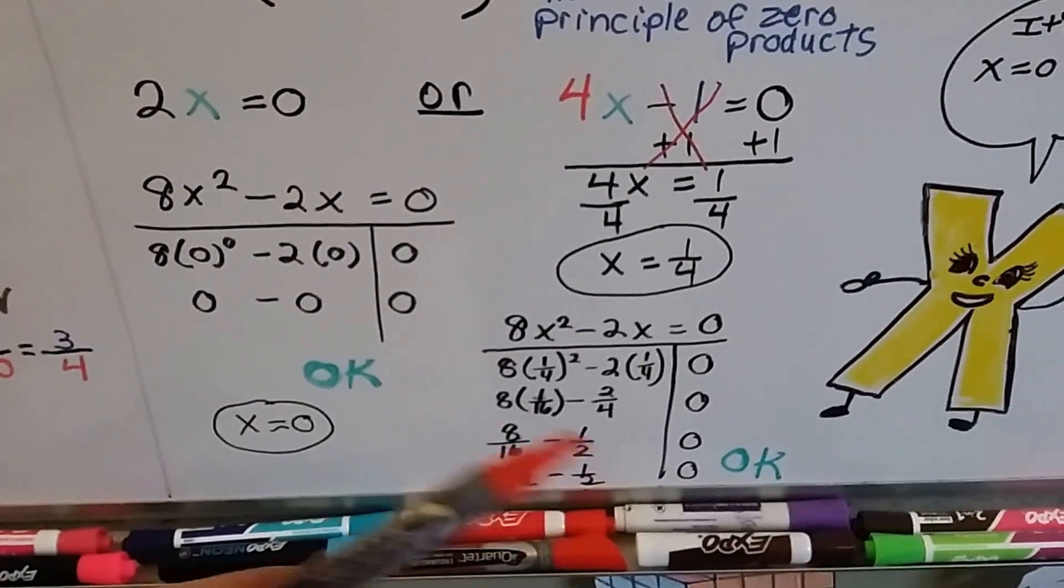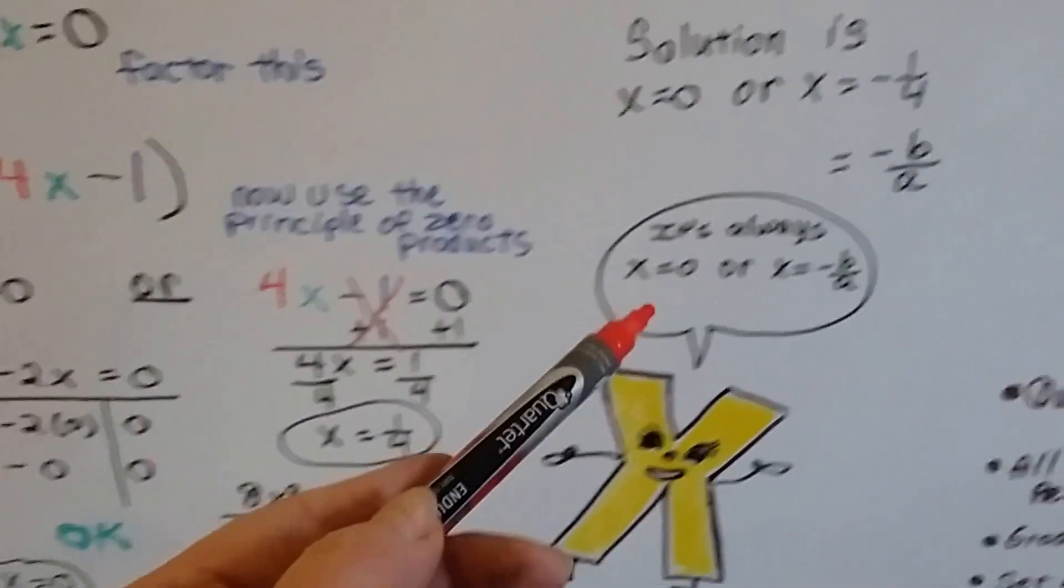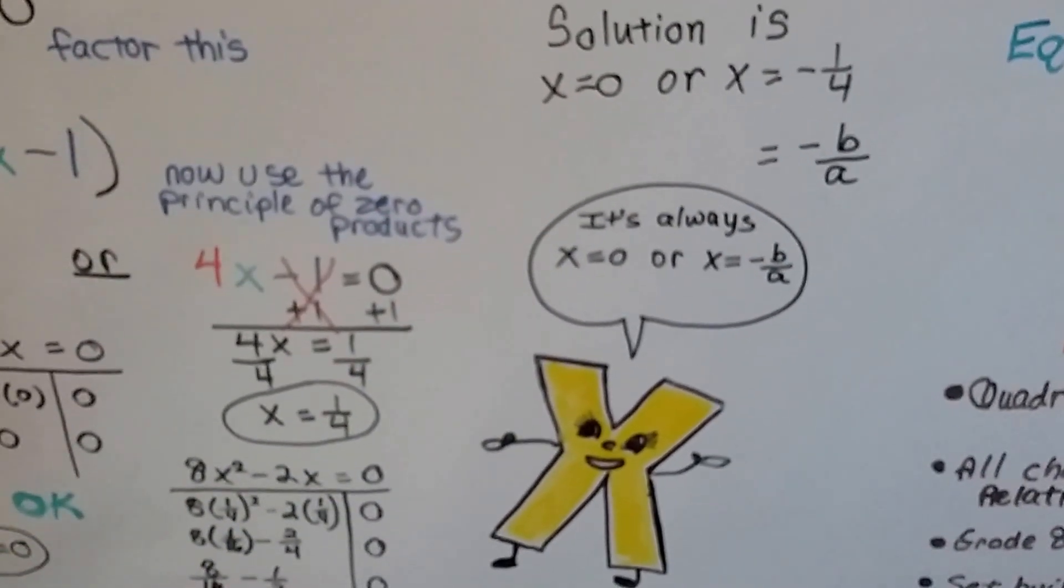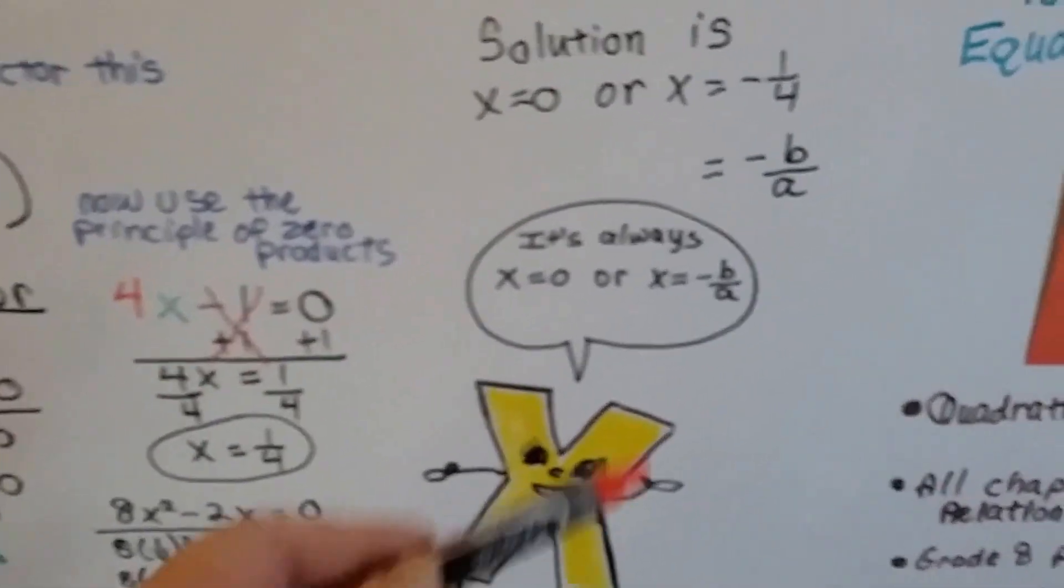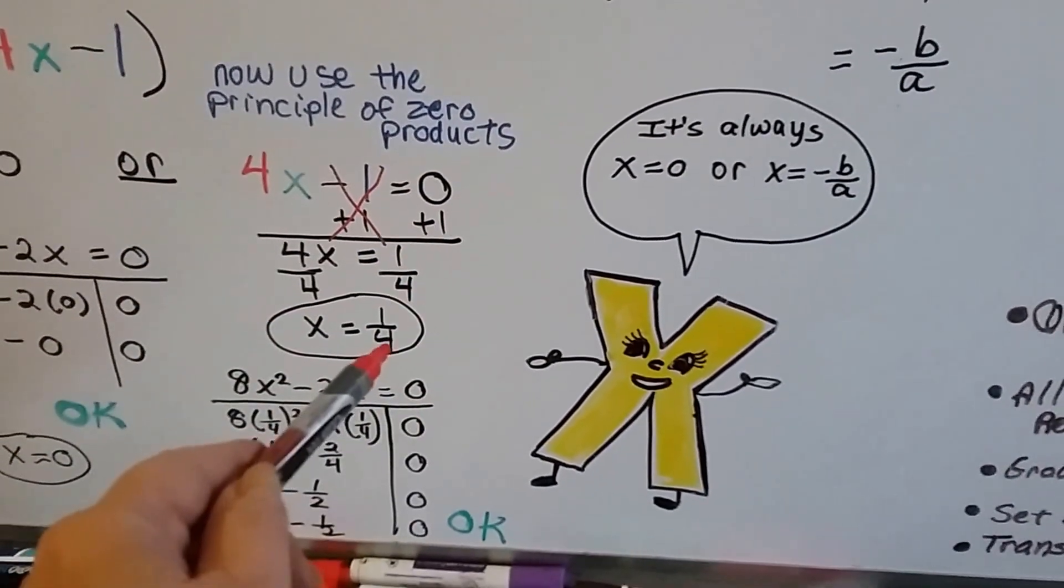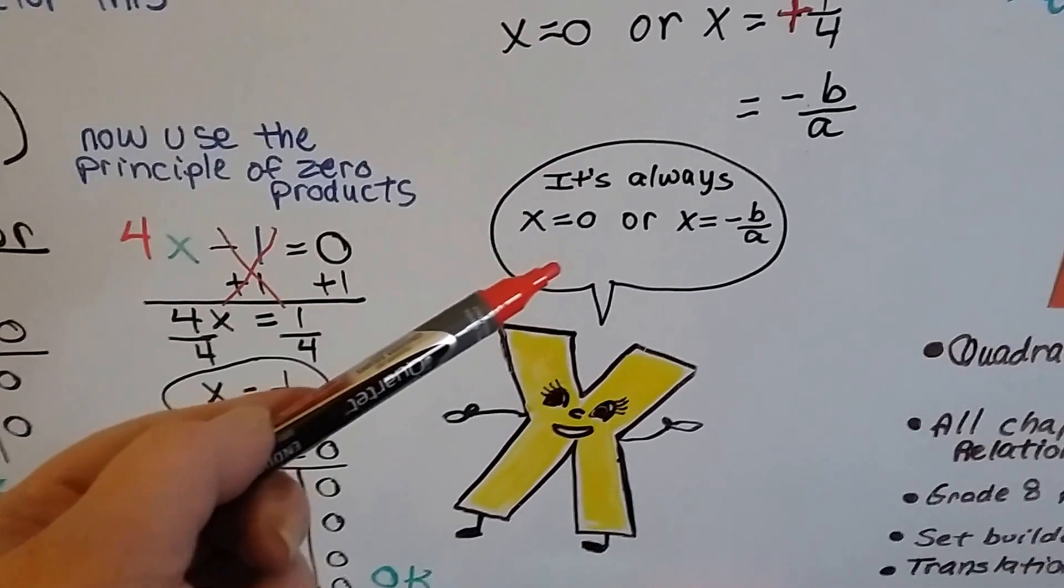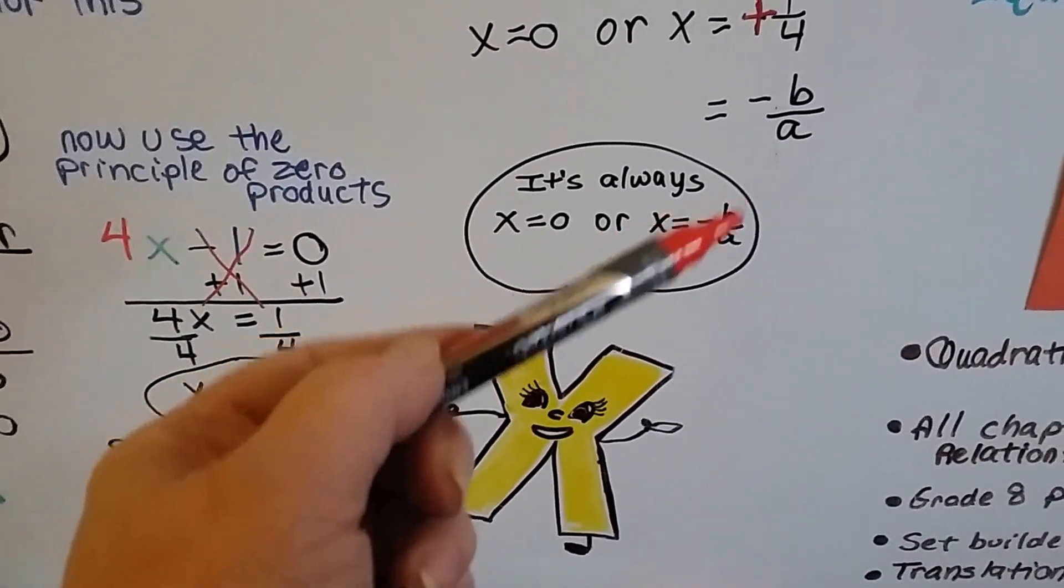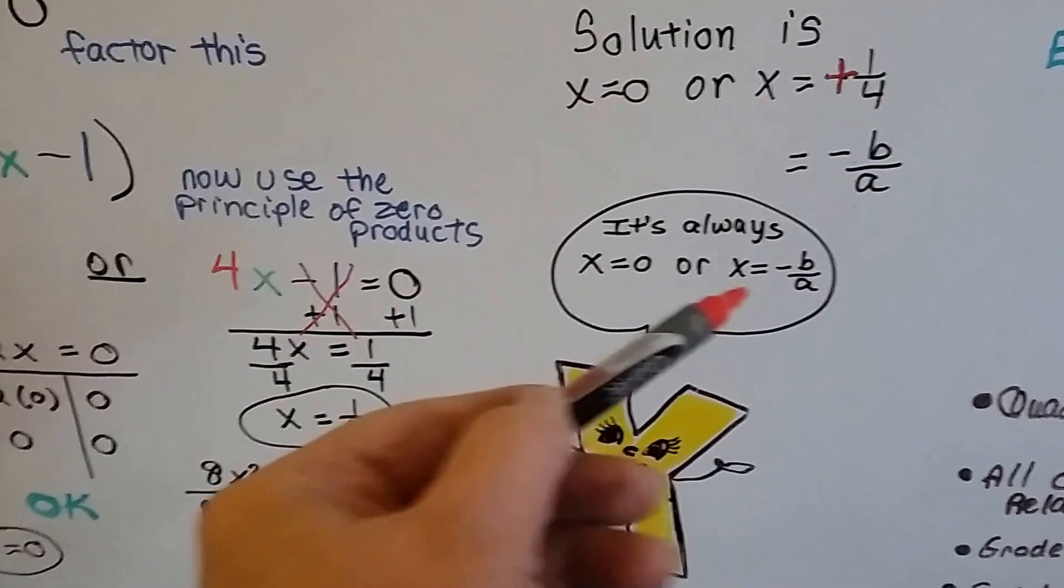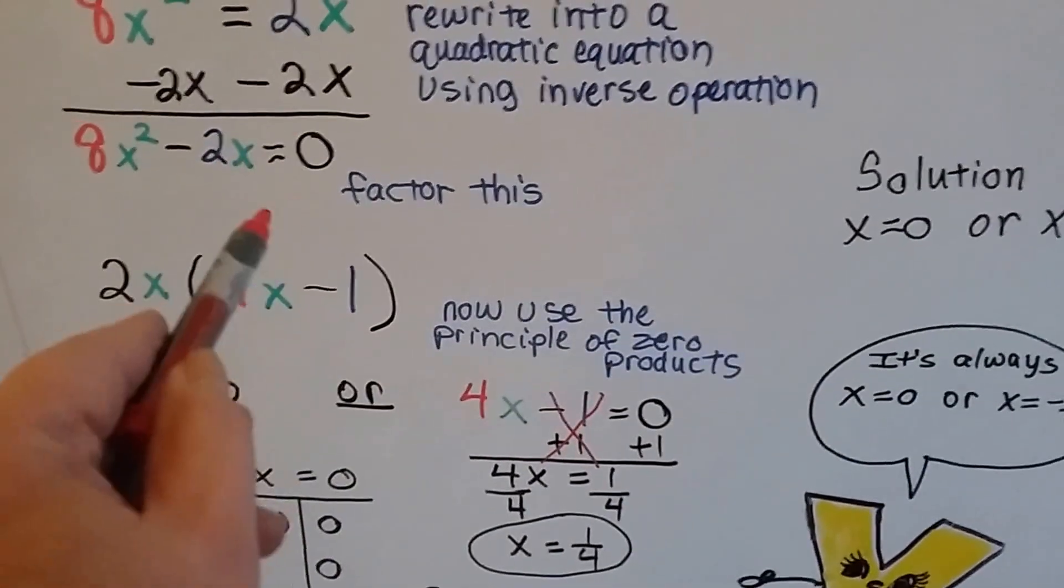We can plug them in and check them. And if they both come out to equal zero, we did okay. And our solutions are x equals 0, x equals 1 fourth. The solution's always going to be x equals 0 or x equals b over a or minus b over a. It's going to be one of those, depending on if you started with a negative or a positive here. If you start with a negative, then it's going to be a positive. If you start with a positive, it's going to be a negative, because of when you're doing your inverse operation.